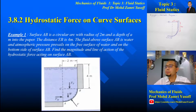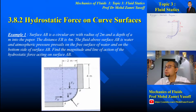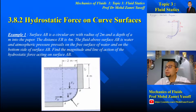Let us look at the first example on hydrostatic force on curved surfaces. The question says that surface AB is a circular arc with radius 2 meters. So the radius is 2 meters on both sides, and a depth of 1 meter into the paper. The distance EB is 4 meters — that is from the water level down to B.